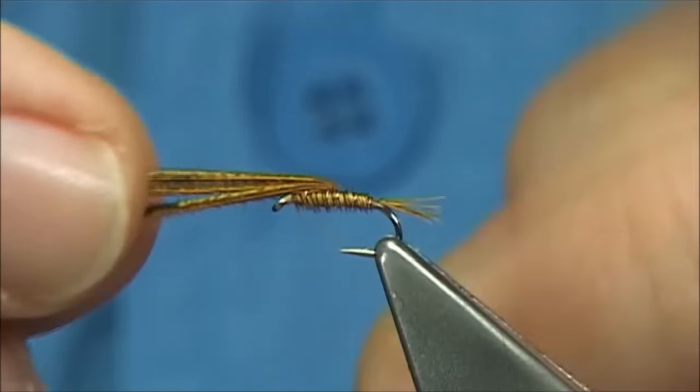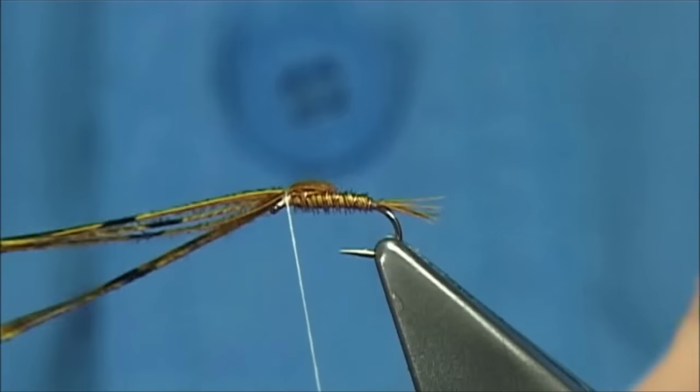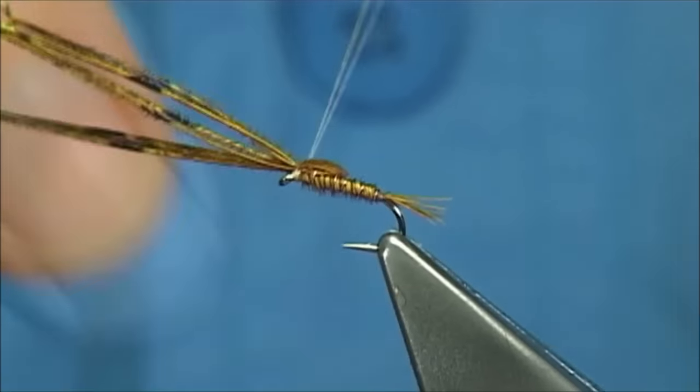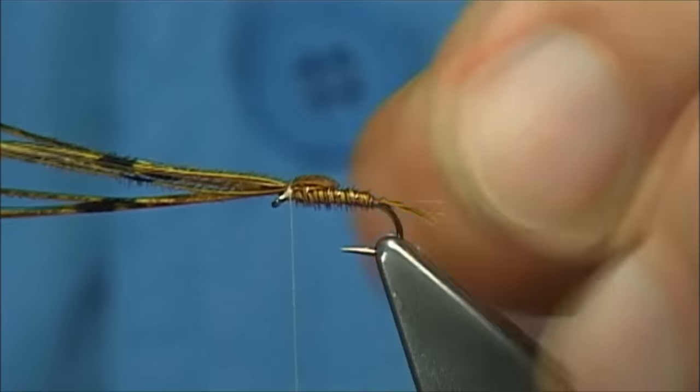Always keeping the thread tight. Then bring over a thorax cover. Just check the pheasant tail. Always make sure it's in. You're looking for that shape. The profile.